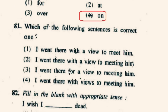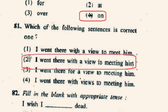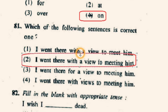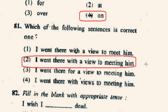Question number 81: Which of the following sentences is correct? The sentence in option 2nd is correct: 'I went there with a view to meeting him.' We always use the gerund form (verb + ing) with the phrase 'with a view to.'